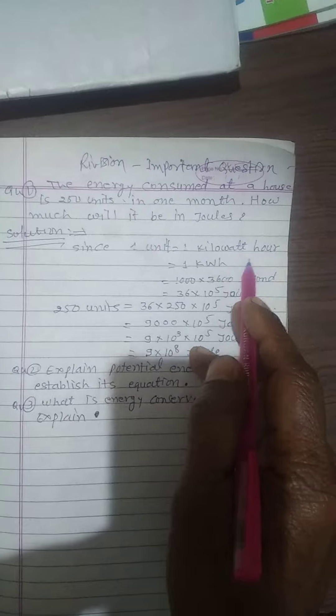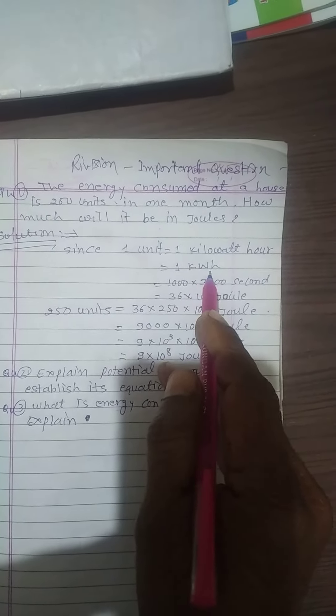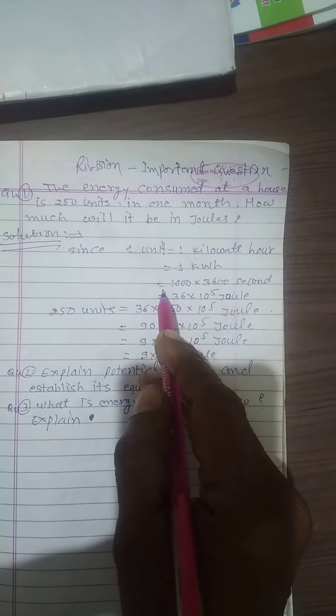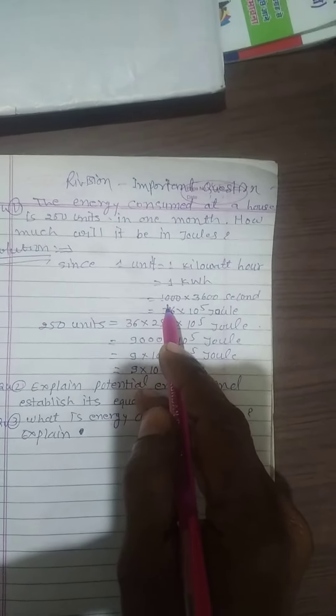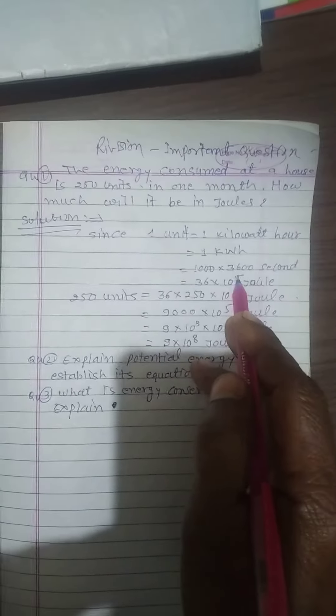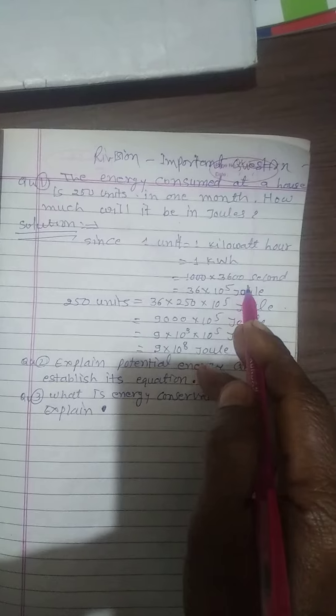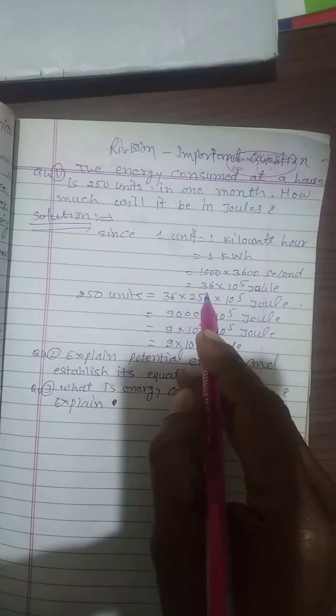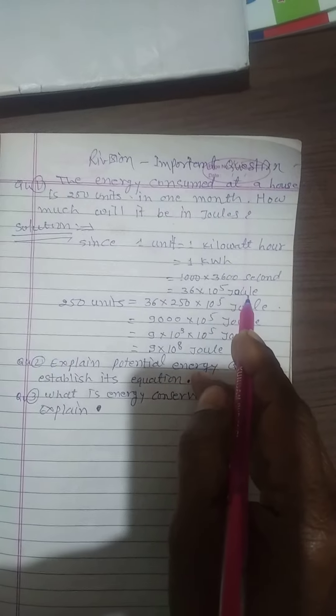Solution. Since one unit equals one kilowatt-hour, which equals one thousand times three thousand six hundred seconds, equals 36 times 10 power 5 joules.